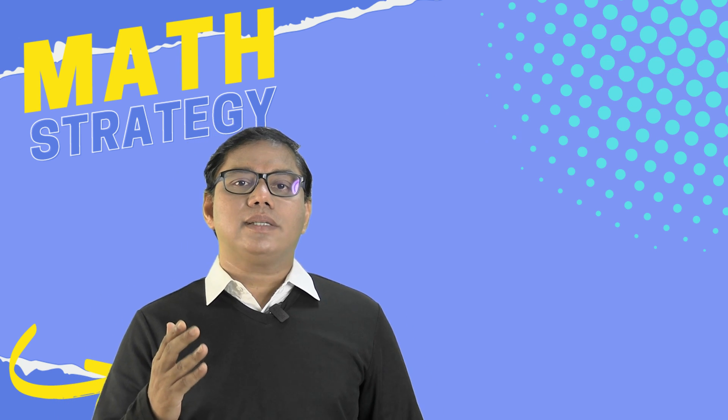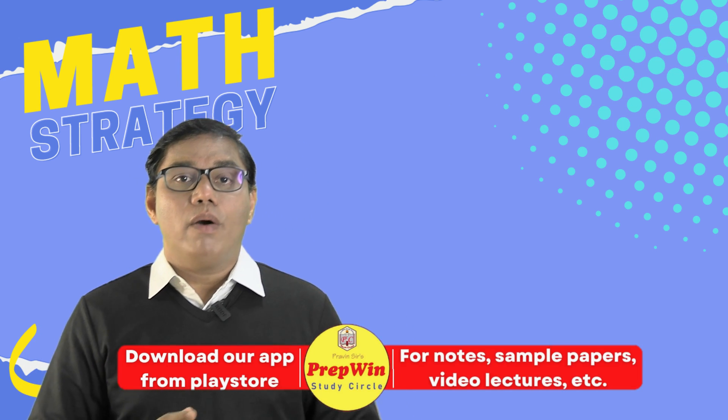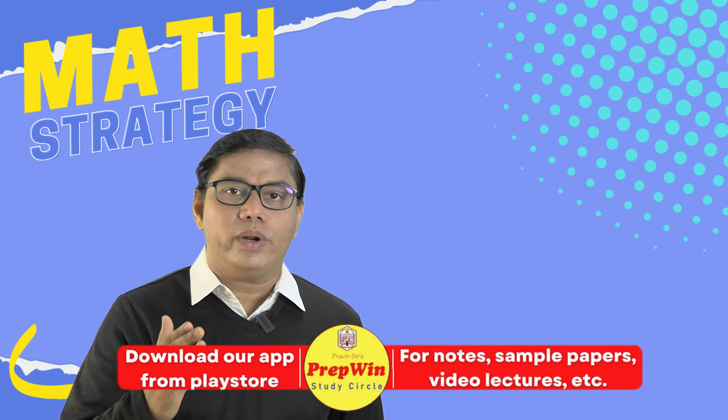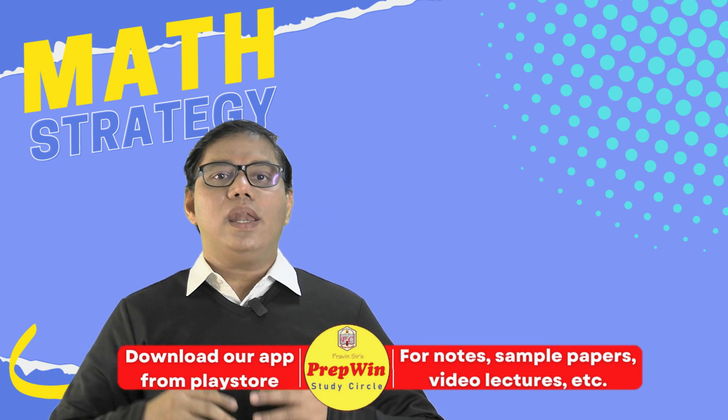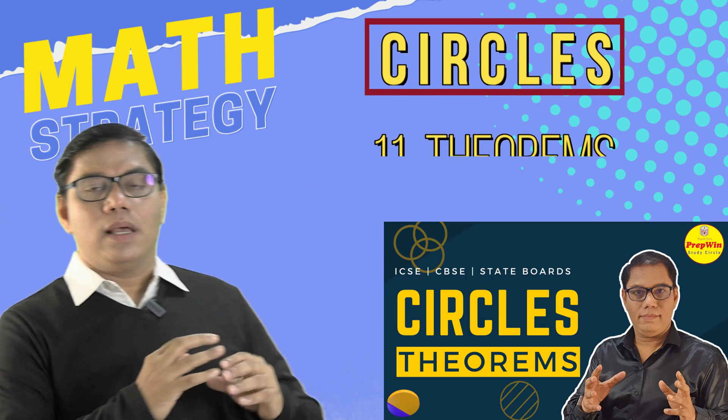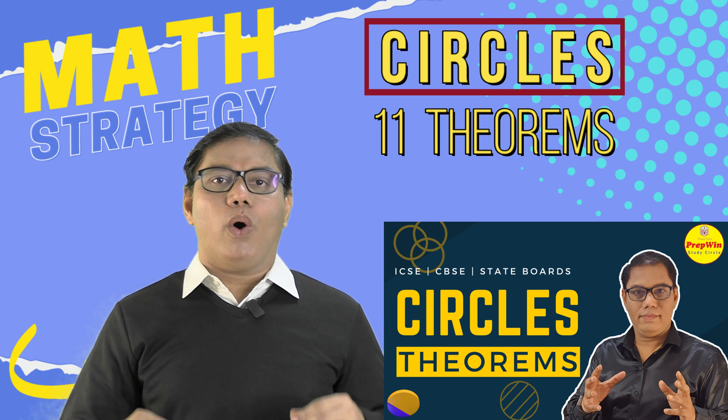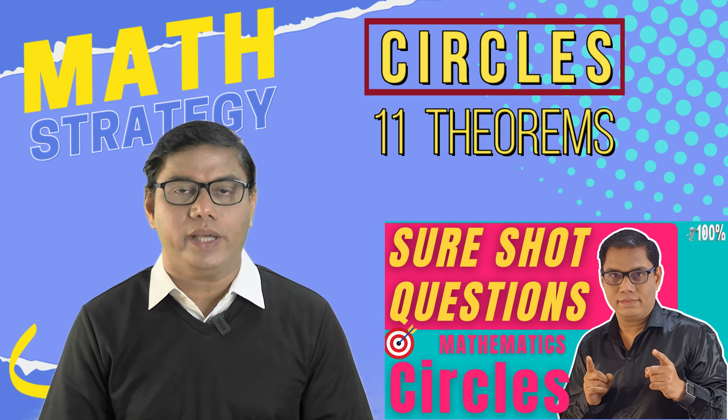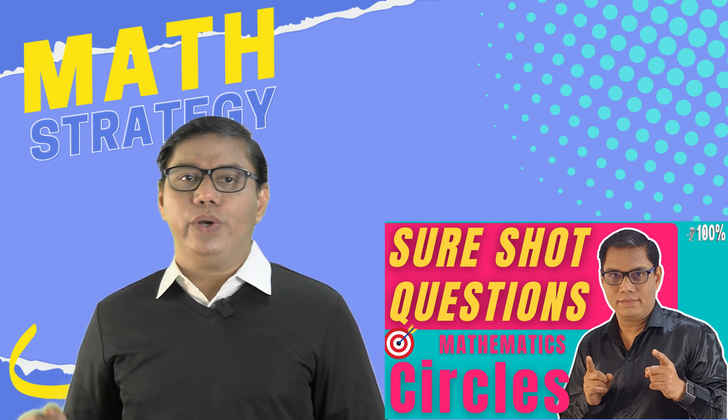Don't get me wrong. I am discussing strategies with you. First of all, you have to identify your speed breakers. You have to recognize the problem. Only then solution will follow. Also the chapter circles. I have made a special video on the theorems of the circle and also the video on the sure shot questions. Please watch those videos.